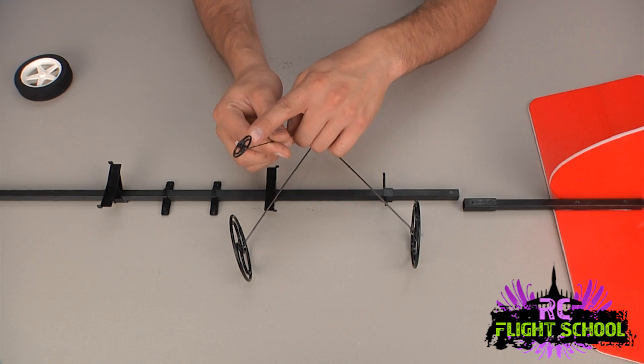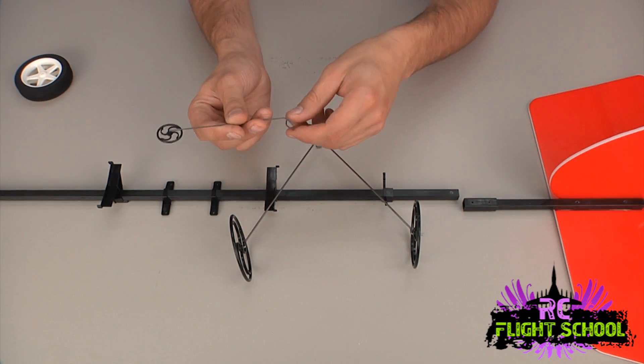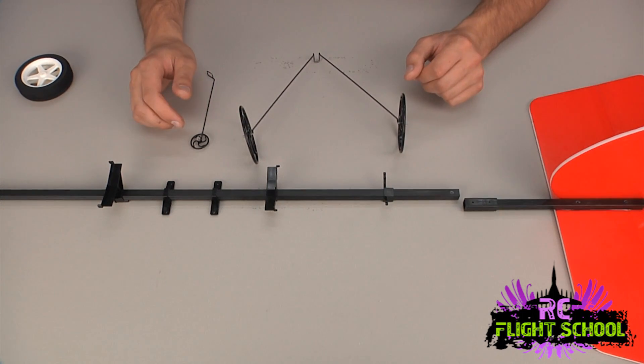Tail wheel, same story here. The wheel just slides on. There's a small plastic keeper that holds it in place. Now we can move on to assembling the wing.